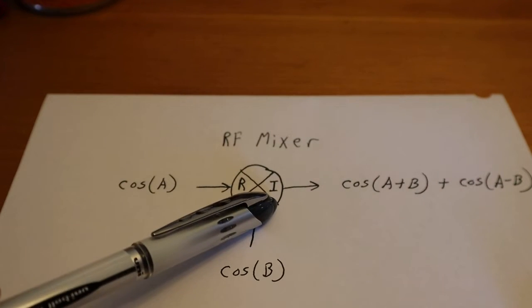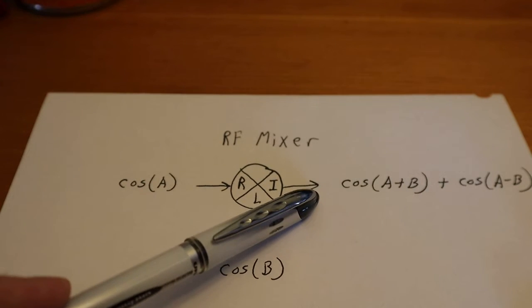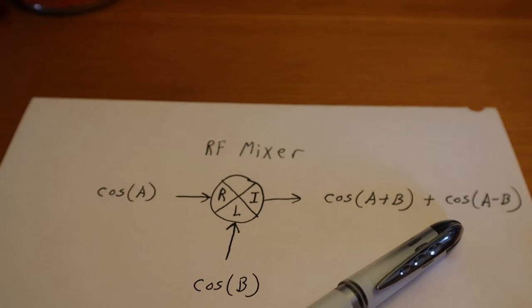And the output here is the I, which we call the intermediate frequency. Now straight out of the mixer, we have two main products. We have the sum and the difference.